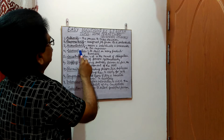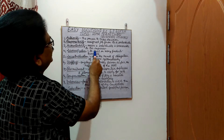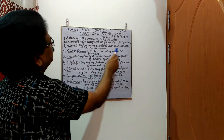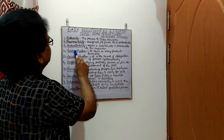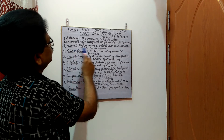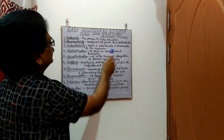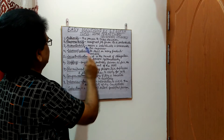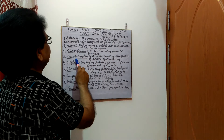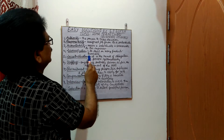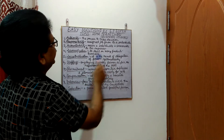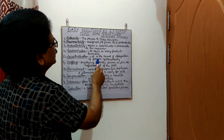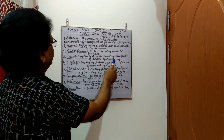Diversification means to deal in many products business. Decentralization. It is the result of delegation of powers systematically.